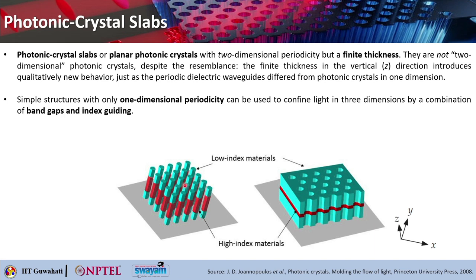If you take the inverse of this structure of array of columns, you can also think of a slab with a periodic array of holes. Here the hole thickness is basically limited. The red region has high index material and the surrounding medium is low index, which gives you index guiding. In the lateral X and Y dimension, it is a 2D periodic Photonic Crystal arrangement, so you get a photonic band gap to confine light along the lateral dimensions.